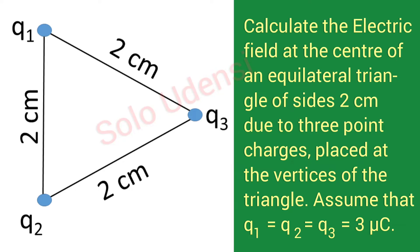Calculate the electric field at the center of an equilateral triangle of side 2 cm due to three point charges placed at the vertices of the triangle. Assume that Q1 equals Q2 equals Q3 equals 3 microcoulombs.